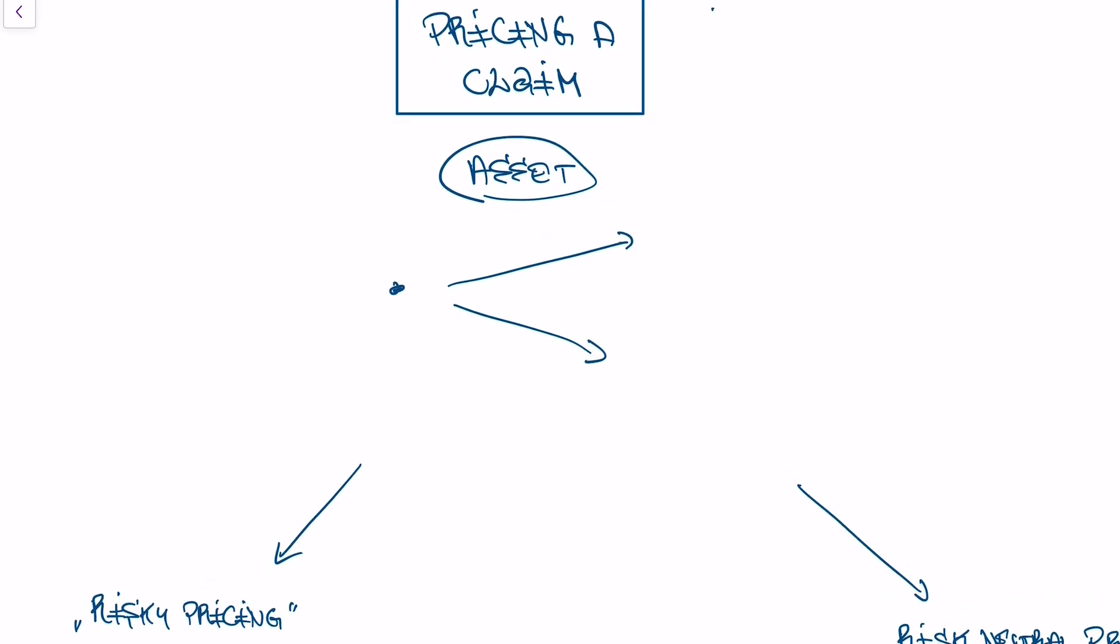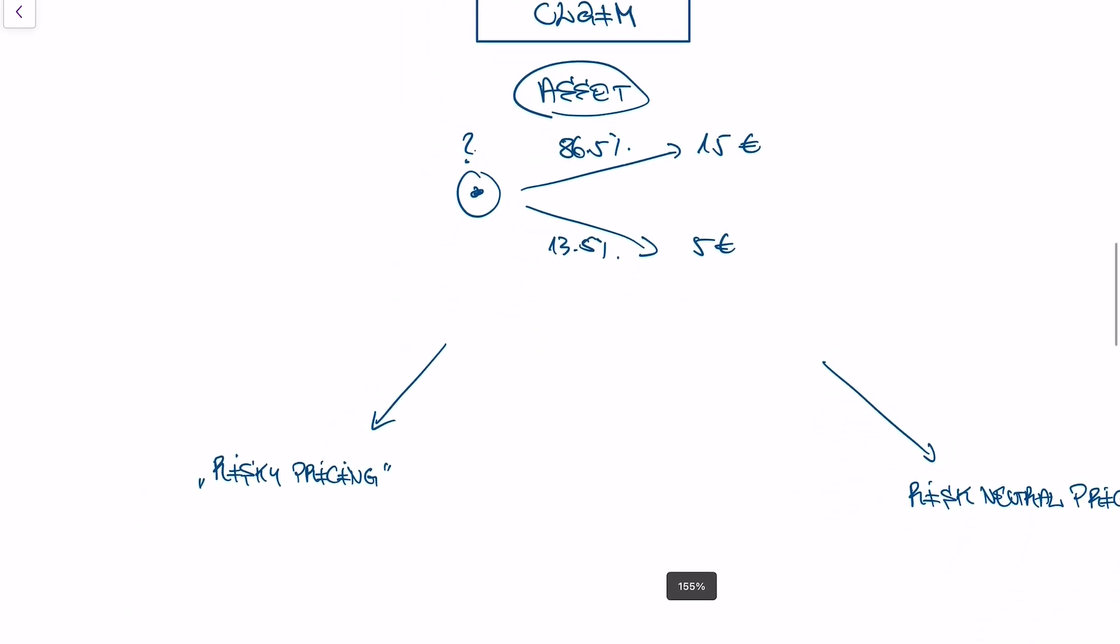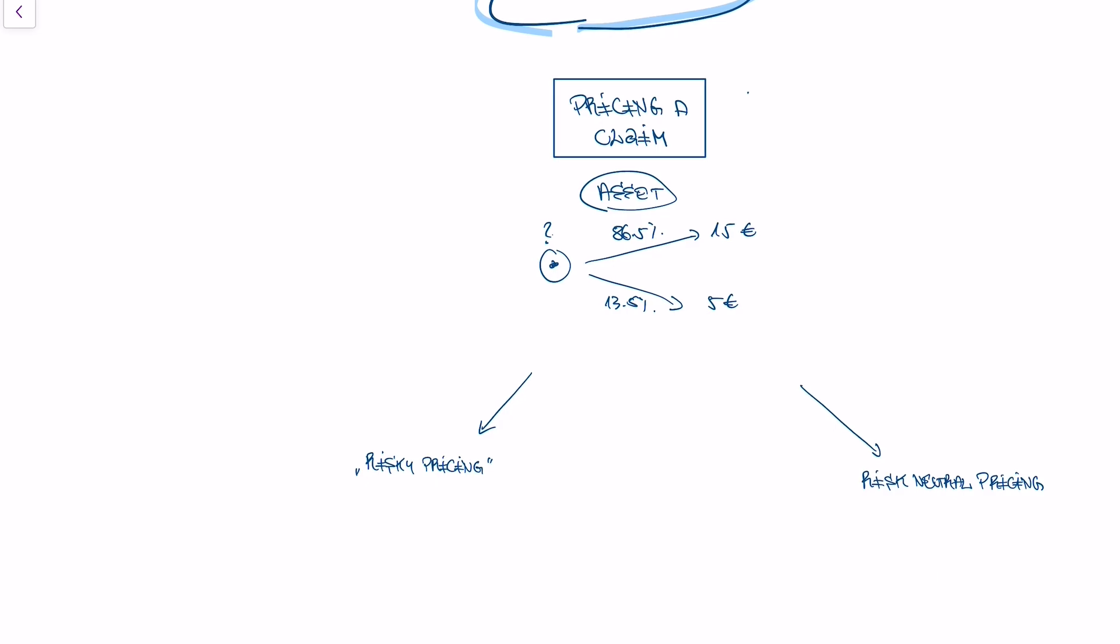Let's say we have an asset and today we buy this asset and it gives us 15 euros tomorrow with a probability of 86.5% and it gives us 5 euros tomorrow with a probability of 13.5%. The question is, what is the asset worth today? What would I pay for it? There are two approaches in finance on how to tackle this question.